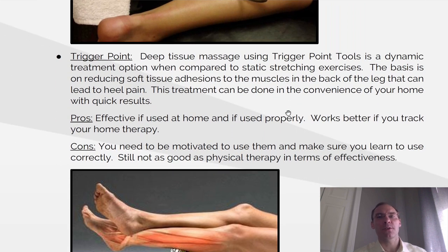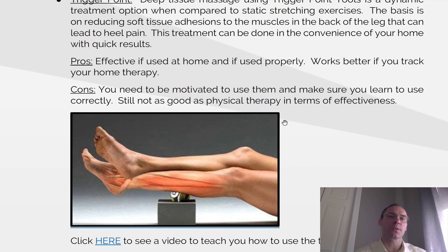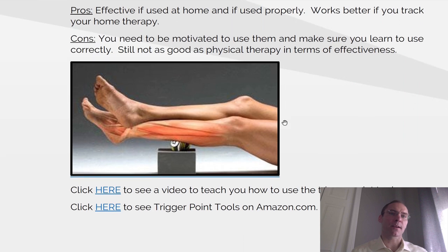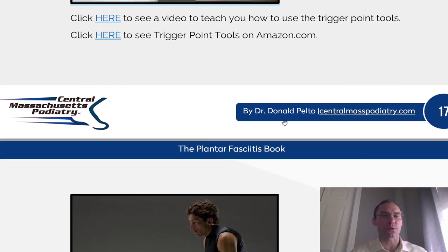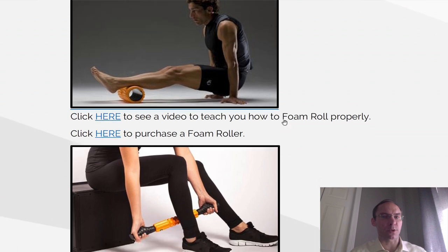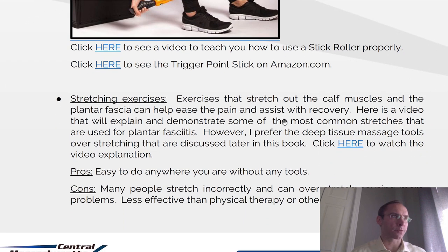Trigger point. Deep tissue massage using trigger point tools is a dynamic treatment option when compared to static stretching exercises. The basis is on reducing soft tissue adhesions to the muscles in the back of the leg that can lead to heel pain. The treatment can be done in the convenience of your home with quick results. Pros: it's effective if used at home and if used properly — it works better if you track your home therapy. Cons: you need to be motivated to use them and make sure you learn to use them correctly. It's still not as good as physical therapy in terms of effectiveness. There are videos and locations to purchase trigger point tools online, including examples of foam rolling and using a stick.